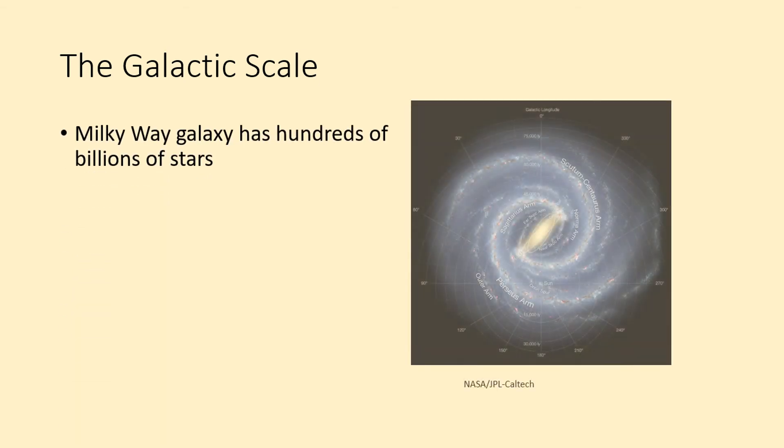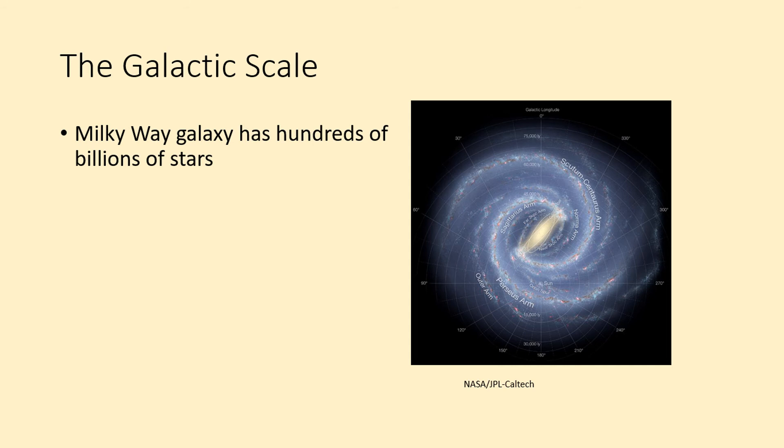The Milky Way is spread out over a diameter of 100,000 light years. So our first step is going to shrink everything we've looked at so far by another 500 billion times.